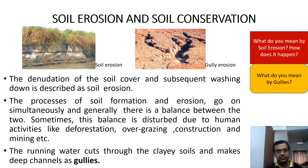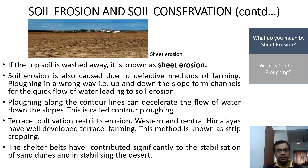What is meant by gullies? Running water cuts through the clay soils and makes deep channels, which are known as gullies. What is meant by sheet erosion? If the topmost layer of soil is washed away, that situation is known as sheet erosion. Soil erosion is also caused by defective methods of farming. Plowing in the wrong way — that is, up and down the slopes — forms channels for the quick flow of water, leading to soil erosion.